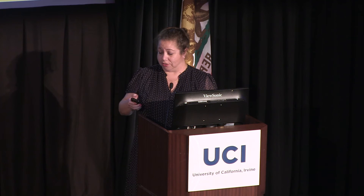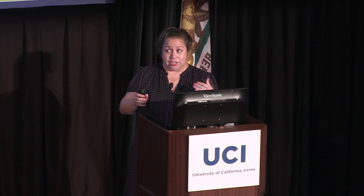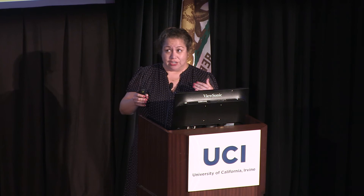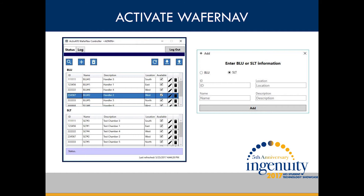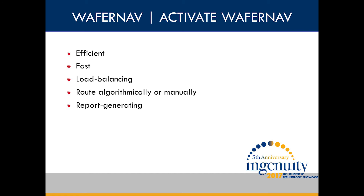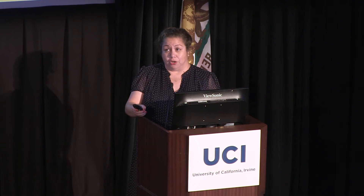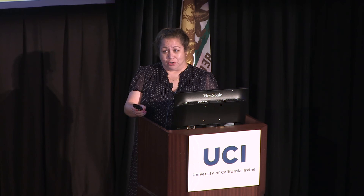Enter WaferNav. From our mobile app, an operator may receive delivery information and document each step in a three-part testing system of load, test, and unload. Each entry updates the database so a system administrator may know where any given lot is at any given time. From the desktop controller, Activate WaferNav, an administrator may upload delivery information and view historical data to ensure proper load balancing for future cases. Using WaferNav and Activate WaferNav, you'll know the location of any given wafer at any given time. You can also automatically configure routes, manually override them, and generate scalable reports. Please stop by our table. Thank you.